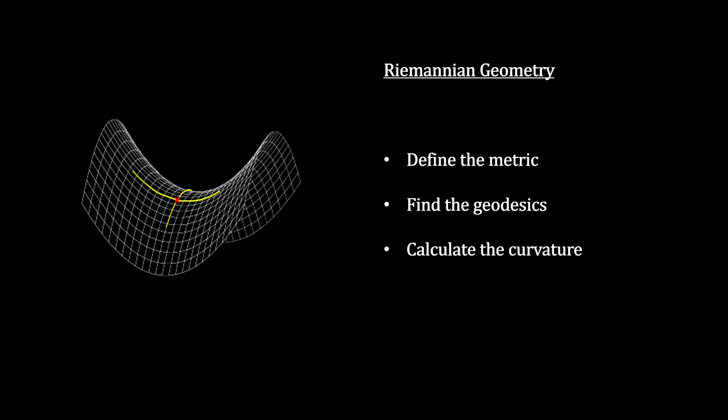Riemann developed the mathematics for this generalized space with any number of dimensions. Basically, he came up with a three-step process. First, we define a metric for the space that allows us to measure distances. Second, we use the distance metric to find the geodesics for the space. And third, we use the geodesics to define what we mean by curvature.